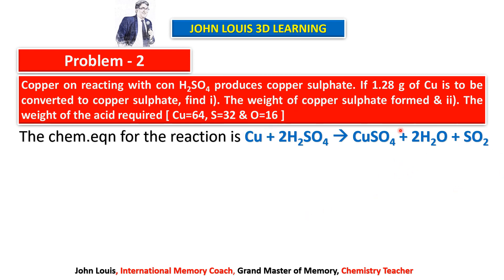Since the metal is copper, we get copper sulphate, and water and sulphur dioxide are standard products — you always get water and sulphur dioxide. We need to balance the equation. I have been emphasizing in every video that you should know how to write the molecular formula correctly first, and then balance the equation perfectly.